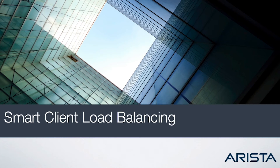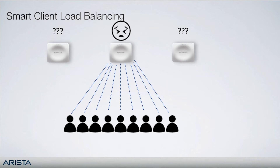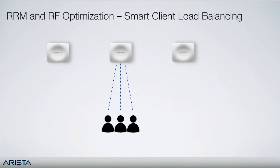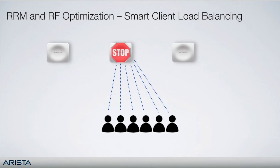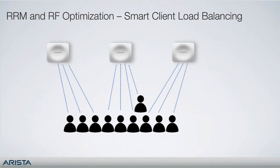Speaking of dense deployments, this is a perfect segue into smart client load balancing. In areas where APs are densely deployed to provide bandwidth to a large number of users in a smaller area, clients will often blindly connect to the AP with best signal strength, resulting in a few heavily loaded APs while others are not utilized at all. Smart client load balancing leverages 802.11k to address this issue. It doesn't disassociate established clients, but instead determines when new associations should temporarily stop being accepted, forcing new clients to look for other available APs, distributing the load.